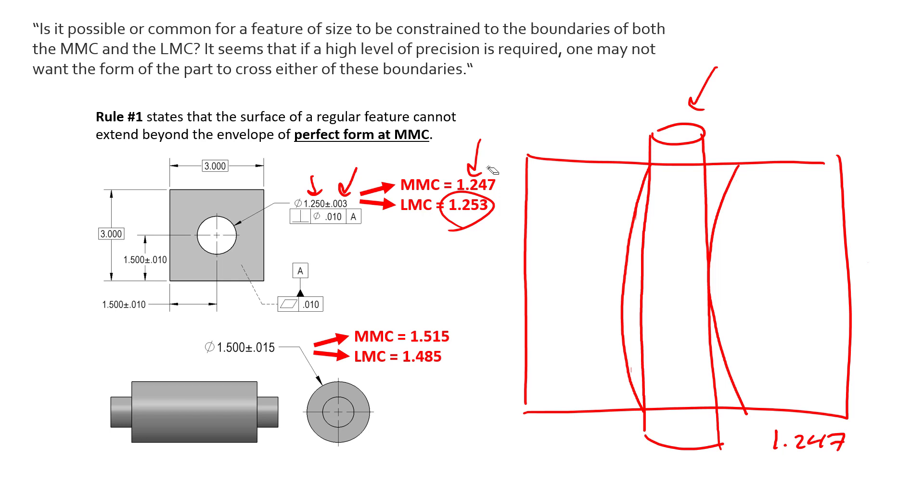And so the smallest hole allowed is our MMC 1.247. And if the largest pin by design is 1.247 and one of them has form error, it won't assemble. So that's why we restrict allowing any form to pass inside that envelope at MMC,